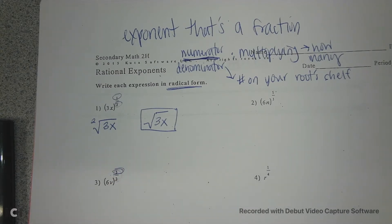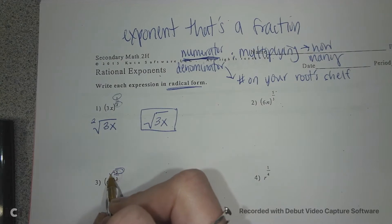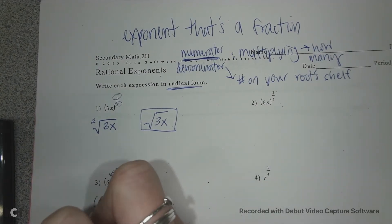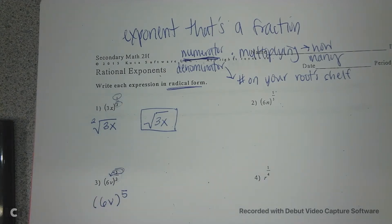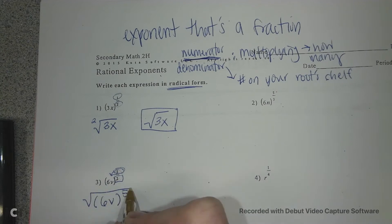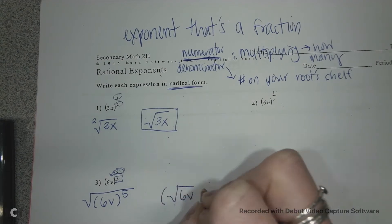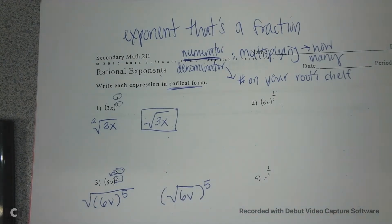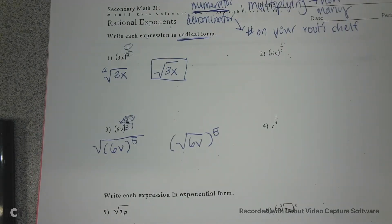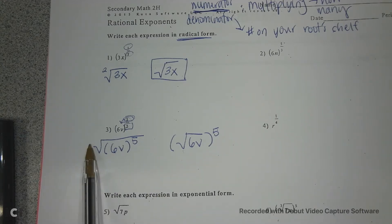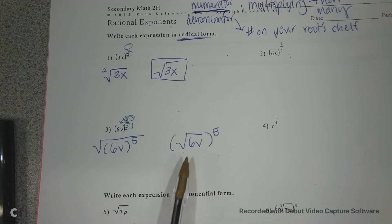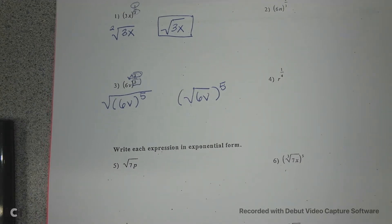You can write fractional exponents two different ways. I want five of them, then put this number on the shelf — or you can do the root first, then the exponent. It's sometimes easier to do the exponent first and then take the root, but you're working with bigger numbers that way. If you take the root first, you're working with smaller numbers, so pick which you prefer.